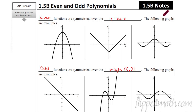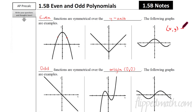Even functions are symmetrical over the y-axis. The following graphs are examples. Symmetry means that for every point, if we're symmetrical over the y-axis, then every point will match up to a point on the other side of the y-axis. So even functions, if you were to fold the paper on the y-axis, would have a partner on the other side. Every point x, f(x) would be mapped to negative x, y. So this point at 3, negative 1 — if we go to the other side, we get negative 3 with the same y value. That's what it means to be an even function.